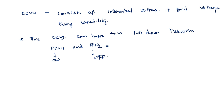Looking at the circuit, we have PMOS transistor M1 and PMOS transistor M2. Below M1 is pull down network one, and below M2 is pull down network two. These two are cross-coupled: the output of PDN2 is connected as the input of M1, and the output of PDN1 is connected as the input of M2.